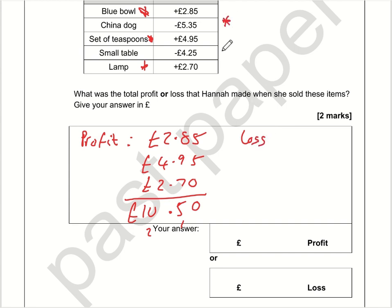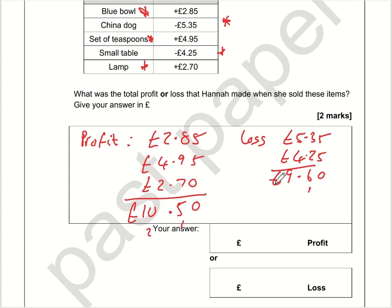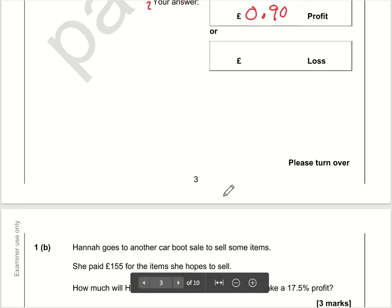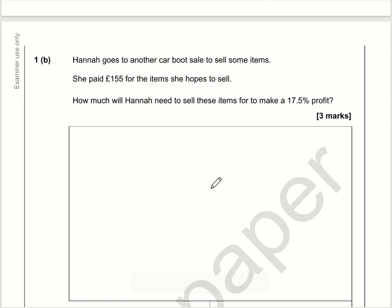She's made a loss on two items, so the total loss is £5.35 plus £4.25. Five plus five is ten, carry one; three, four, five, six; five plus four is nine — so a total loss of £9.60. Overall she's made a profit because £10.50 is greater than £9.60. The difference is 40p up to £10, plus 50p up to £10.50, so that's a 90p profit — £0.90.